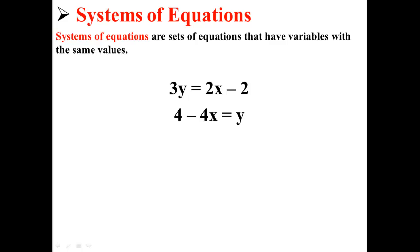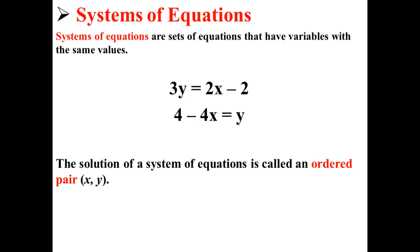Remember that systems of equations are sets of equations that have variables with the same values. For example, here we have a system of equations: 3y equals 2x minus 2, and 4 minus 4x equals y. The solution of a system of equations is called an ordered pair in the format x, y — that is, the x's in both equations are the same, and the y's in both equations are the same.